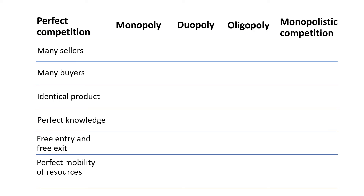When we combine the types of market with their characteristics, we begin with perfect competition. In perfect competition, there are many sellers and many buyers. Their products are identical. Sellers and buyers have perfect knowledge. And the conditions of the market allow free entry and free exit. There is perfect mobility of resources.